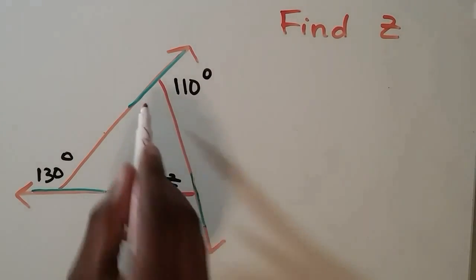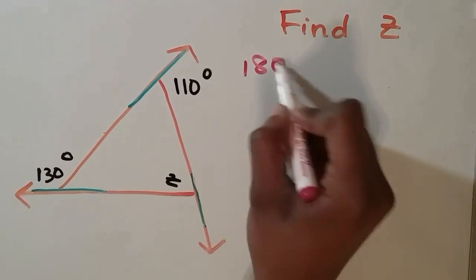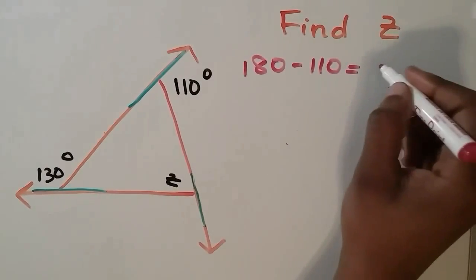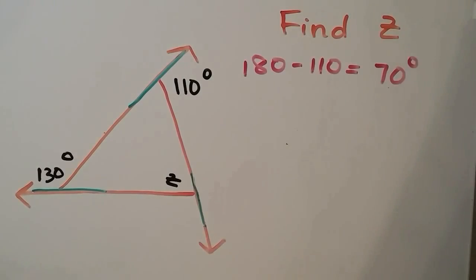Since 180 minus 110 is equal to 70 degrees, we know that 70 is the degree of our interior angle, of our first interior angle.